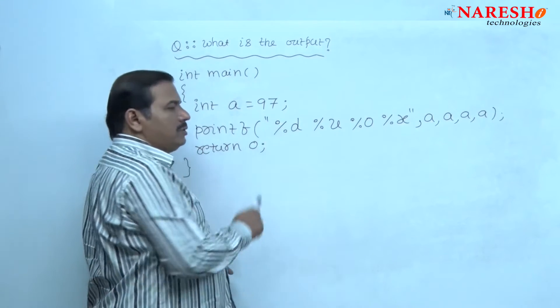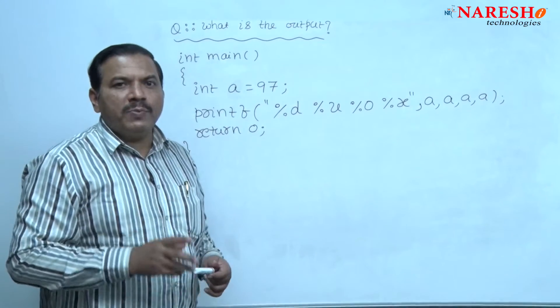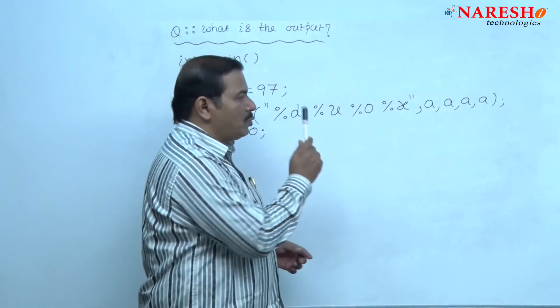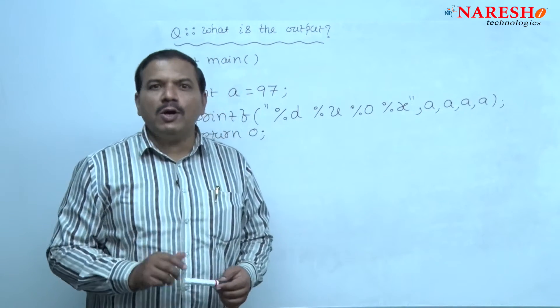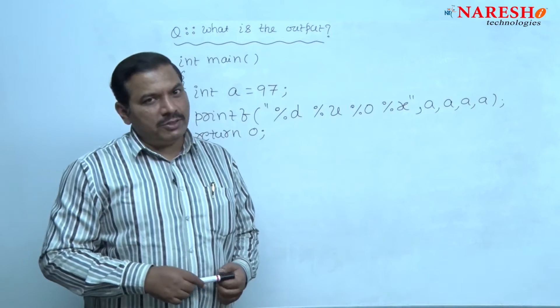%d is used to display decimal integers, %u is used to display unsigned integers, %o is for printing octal integers, %x is for printing hexadecimal integers.